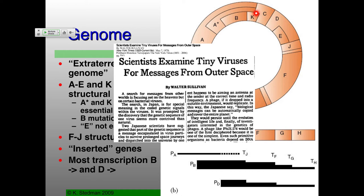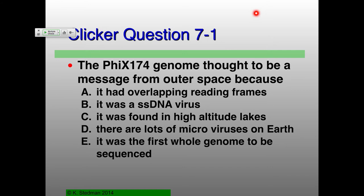So why would this be a potential good mechanism for outer space — I'll answer a clicker question on this. The PhiX174 genome was thought to be a message from outer space because of its overlapping reading frames — it was a single-stranded DNA virus, found in high-altitude lakes, and it was the first whole genome to be sequenced.